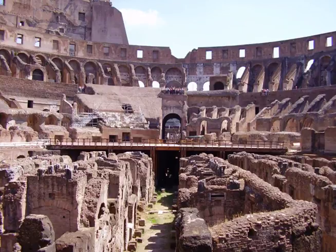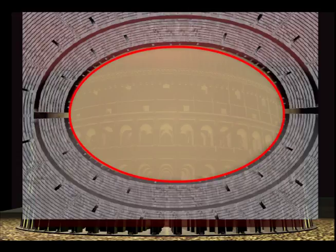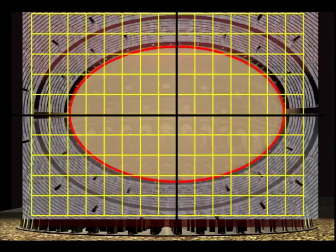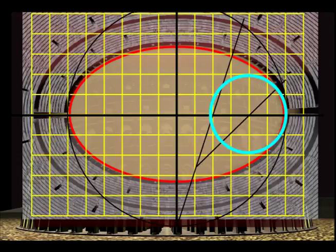Let's analyze how this would work. Here is an ellipse proportional to the arena portion of the Colosseum. It is possible to overlay a series of circles, so that portions of each circle overlaps the curve of the ellipse.